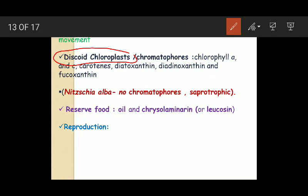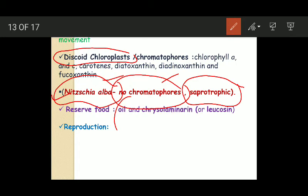There is an exception. Nitzschia alba. The name itself includes that it is having white color. Alba means white. Nitzschia alba does not contain chromatophores. When it does not contain chromatophores, obviously it is lacking the photosynthetic pigments. That is why it is white in color. It is not able to manufacture its own organic food material through photosynthesis and hence its mode of nutrition is saprotrophic. It is just like fungi. It absorbs the organic matter through its body surface.